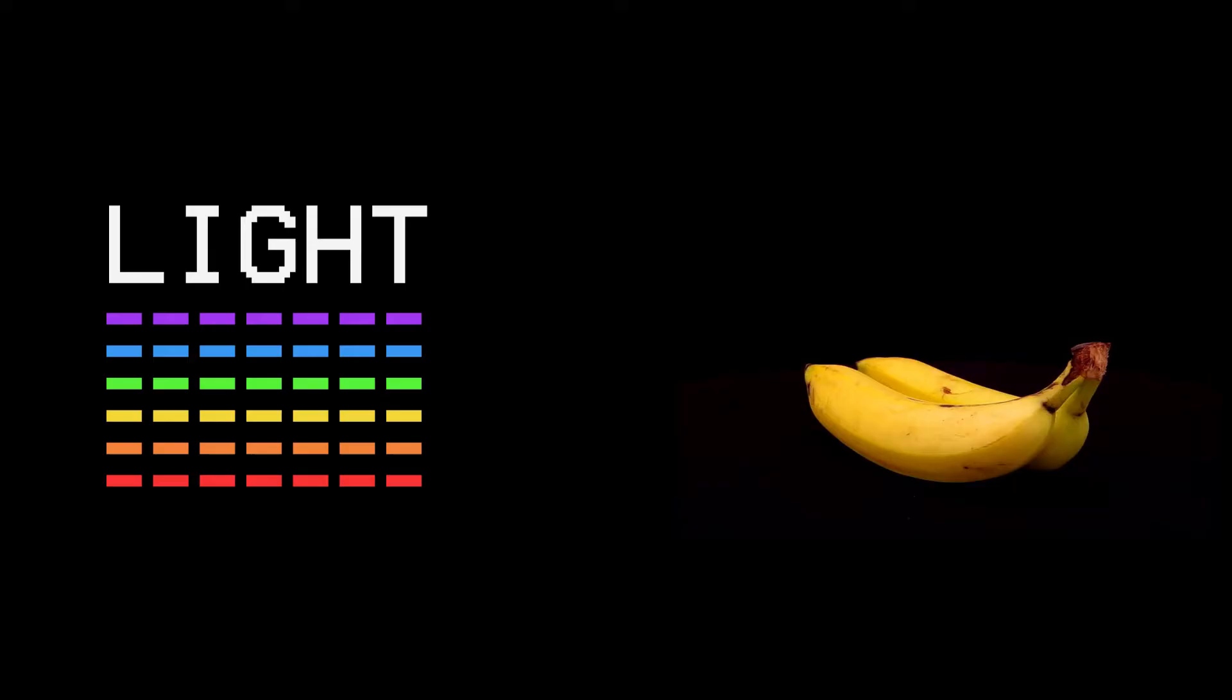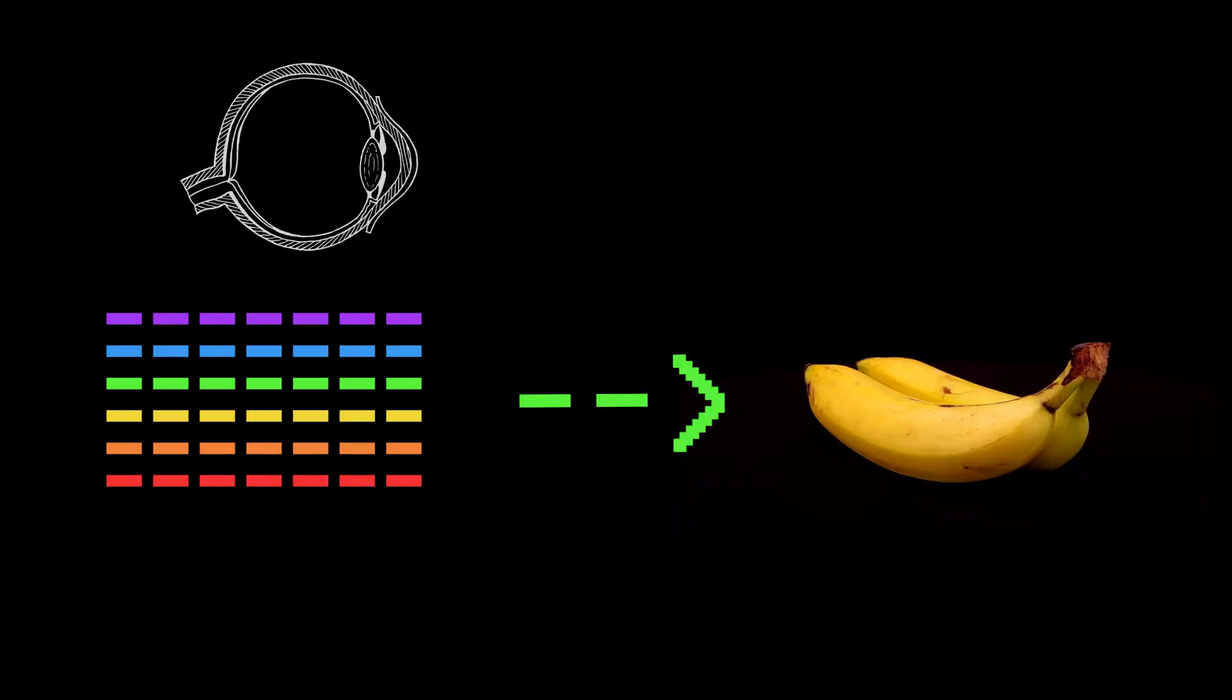When light hits an object, there are two possibilities. It can either reflect or absorb. Colors which are reflected are capable of being interpreted by the human eye, while the absorbed colors are left behind.